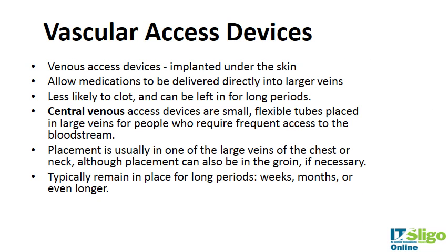We'll have a quick look at vascular access devices as a subtype of catheter. These are devices that access the veins and are typically implanted under the skin, allowing medications to be delivered directly into larger veins. Instead of an IV set, if you need longer-term delivery of medications, you would need a vascular access device. They're less likely to clot than an IV set and can be left in for long periods. Central venous access devices are flexible tubing placed in large veins for people who require frequent access to the bloodstream, such as someone on long-term medication.